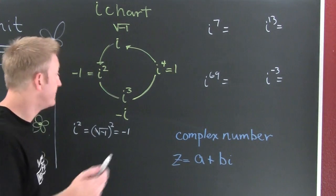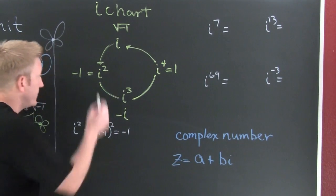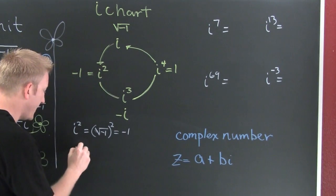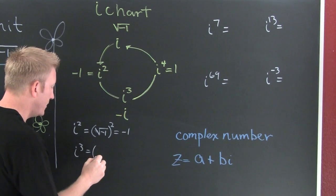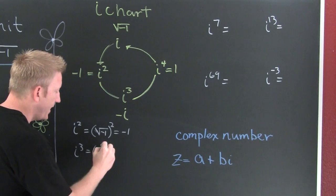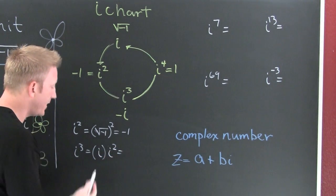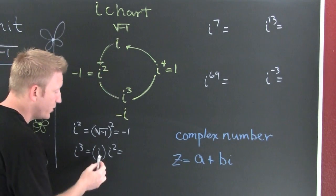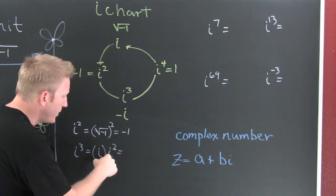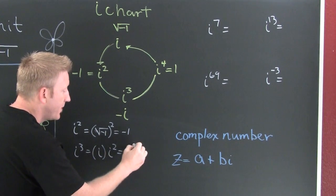Now let's take a look at i to the third. That thing is going to be i times i squared. Well, we know what i is—that's the square root of minus 1. Let's just leave it as i. But what was i squared? It was minus 1, so that's going to give us minus i.